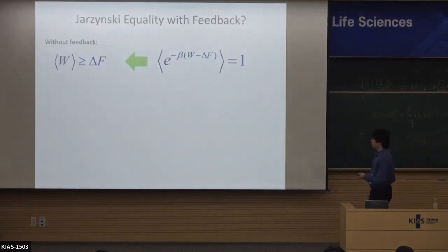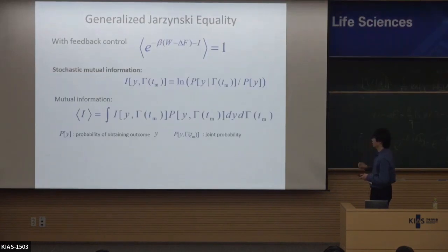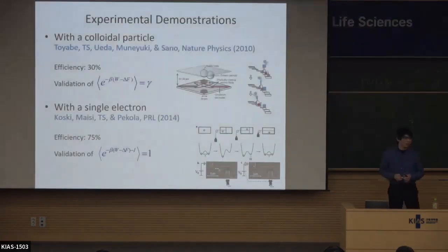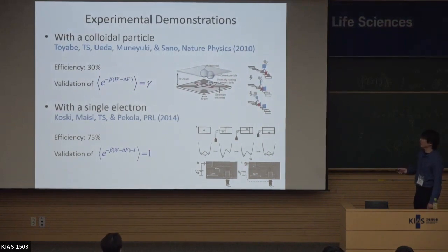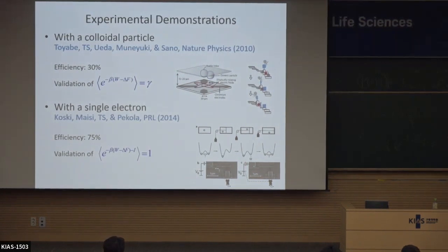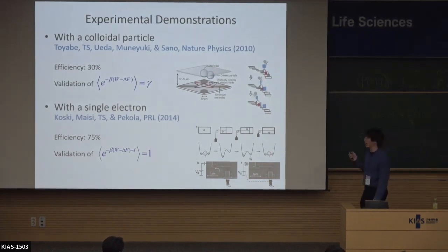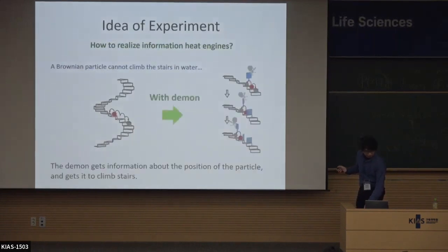Now I'd like to talk about experiments. There are many, many experiments — I think more than 20 or 30 in this decade — but I can't talk about all of them. I'll pick up two experiments that I was involved in. This particle experiment was the first quantitative demonstration of Maxwell's demon; before 2010 there was no quantitative Maxwell's demon experiment. In 2010, Maxwell's demon was first realized by a real experiment.